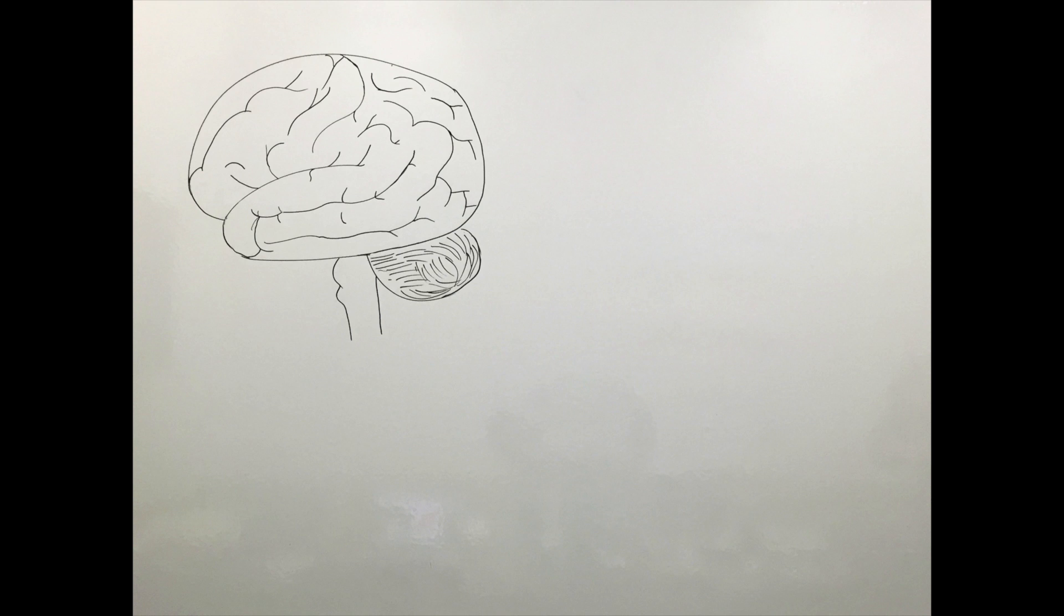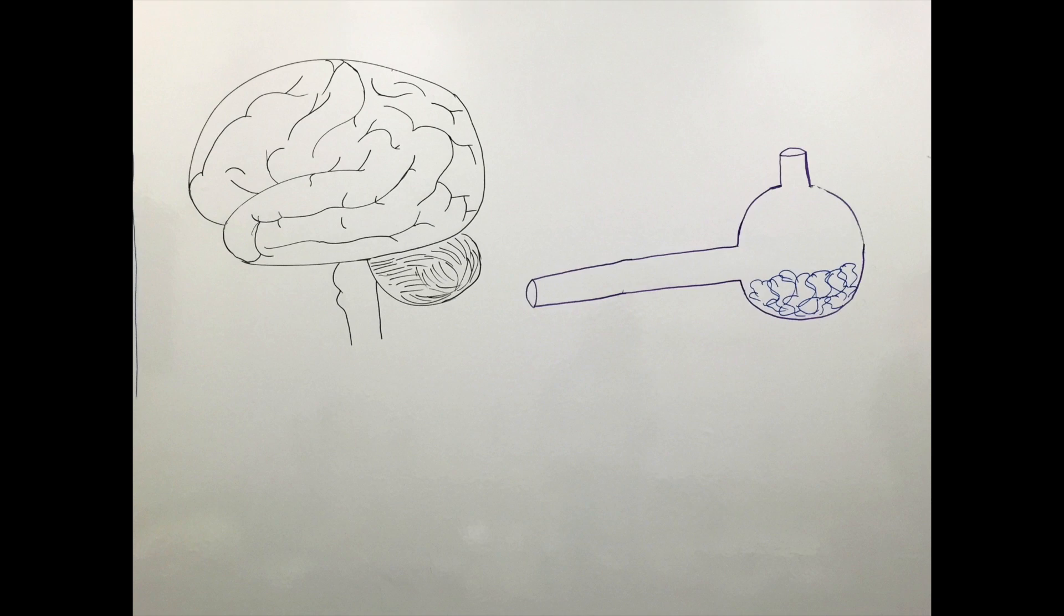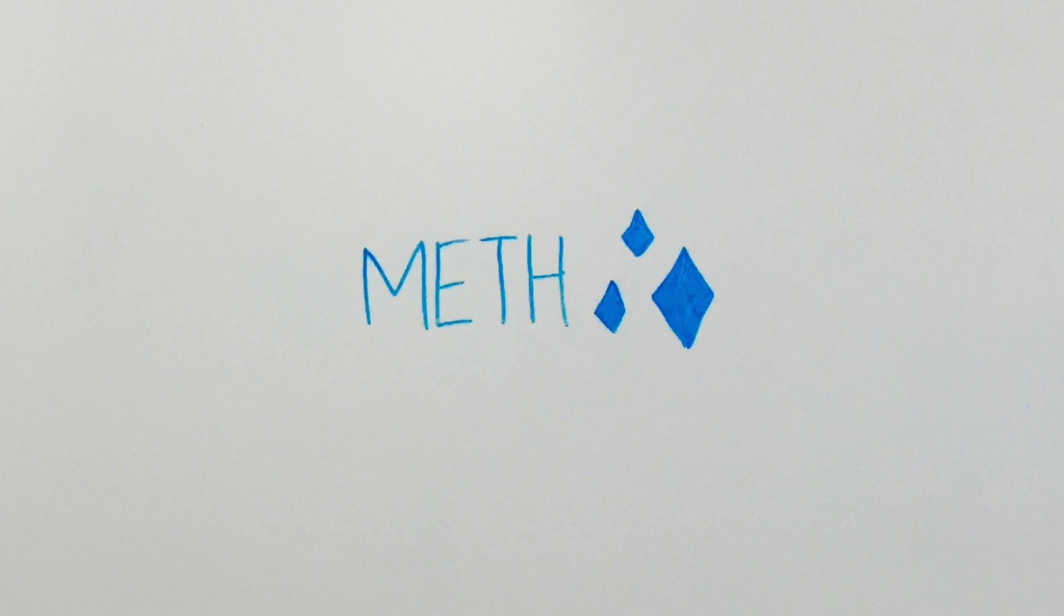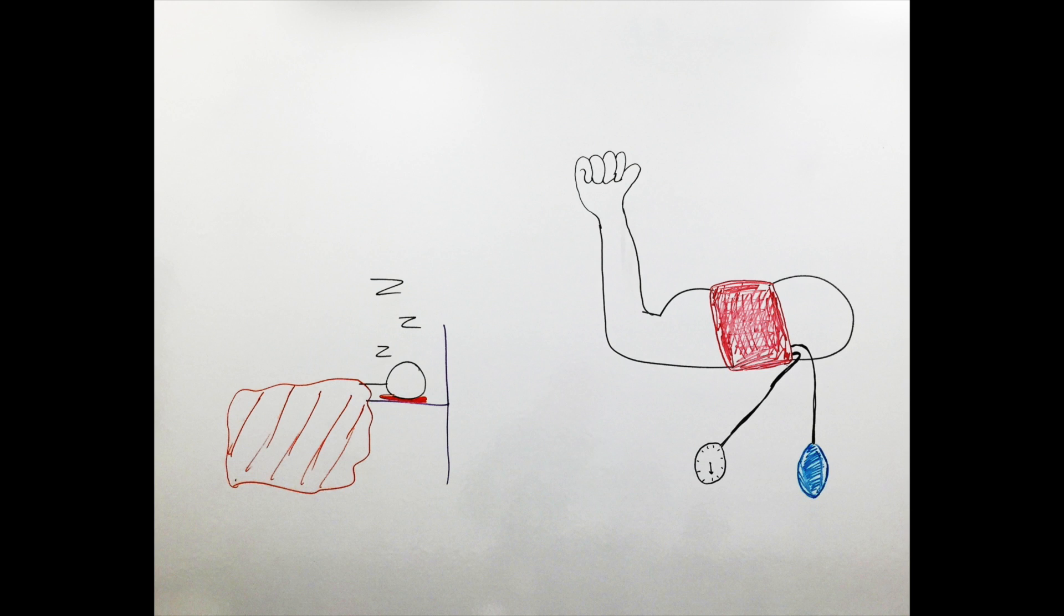This video is on what happens to your brain when you become addicted to a drug like methamphetamine. Methamphetamine is a stimulant that was originally used to treat narcolepsy and maintain blood pressure.